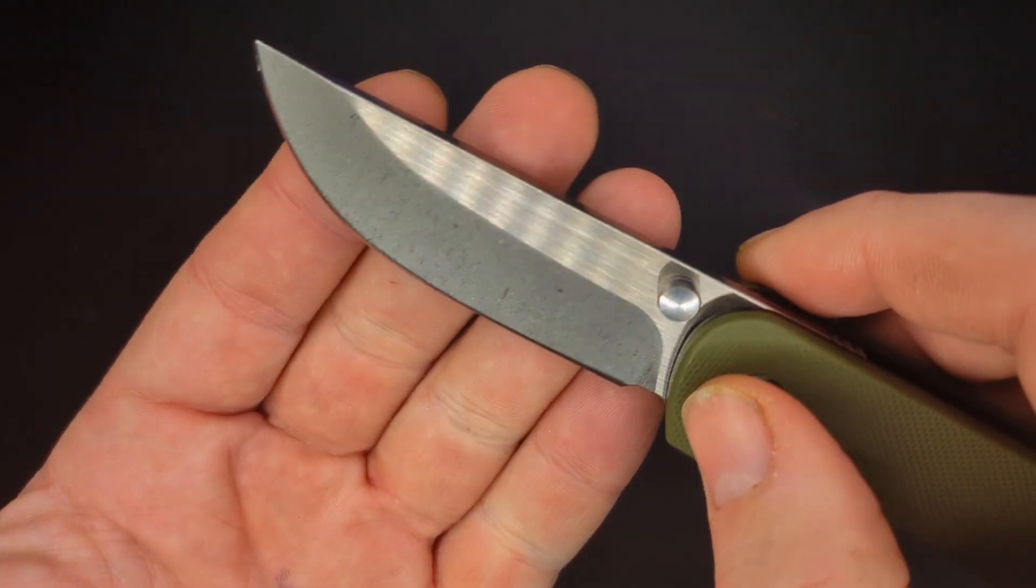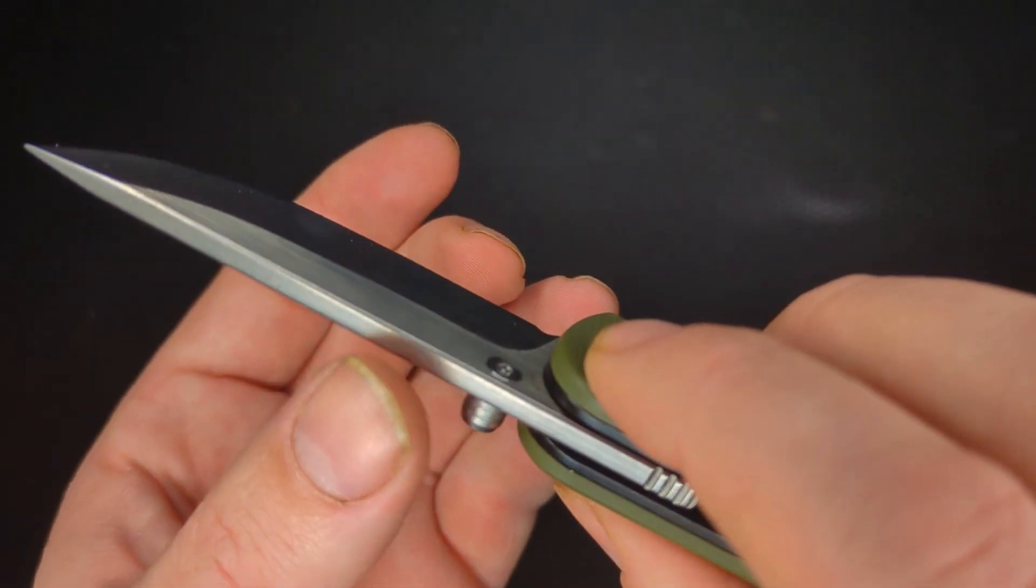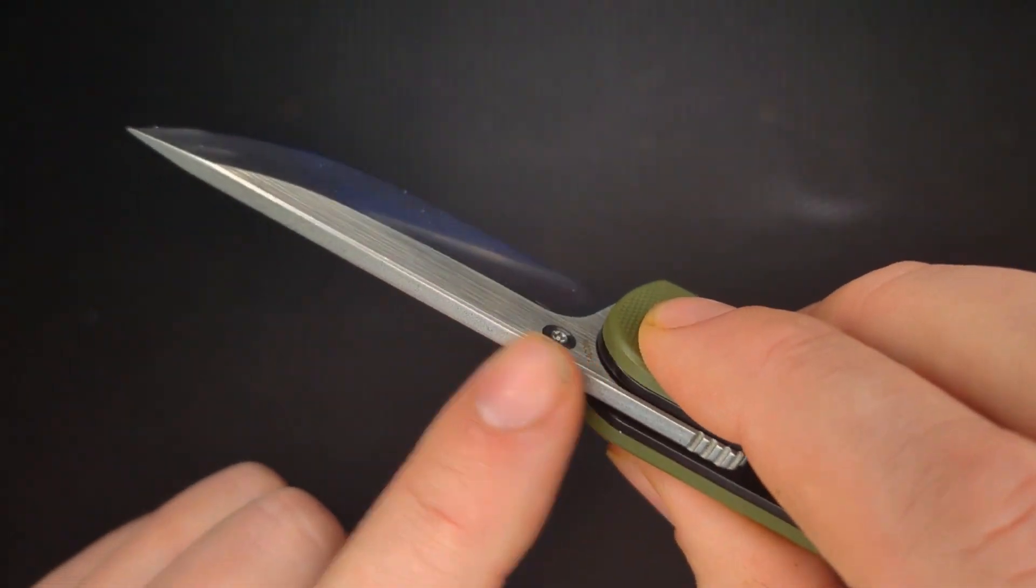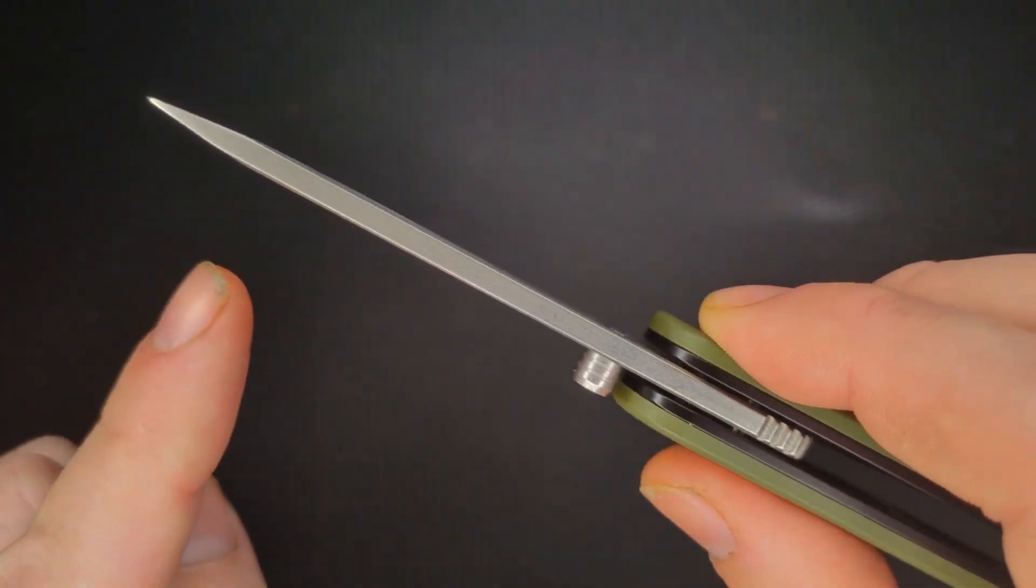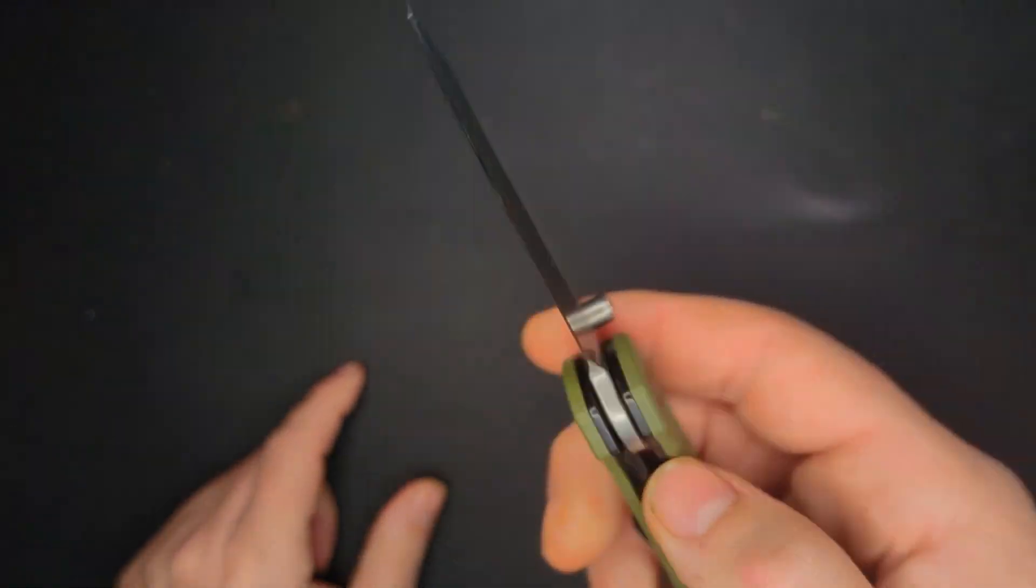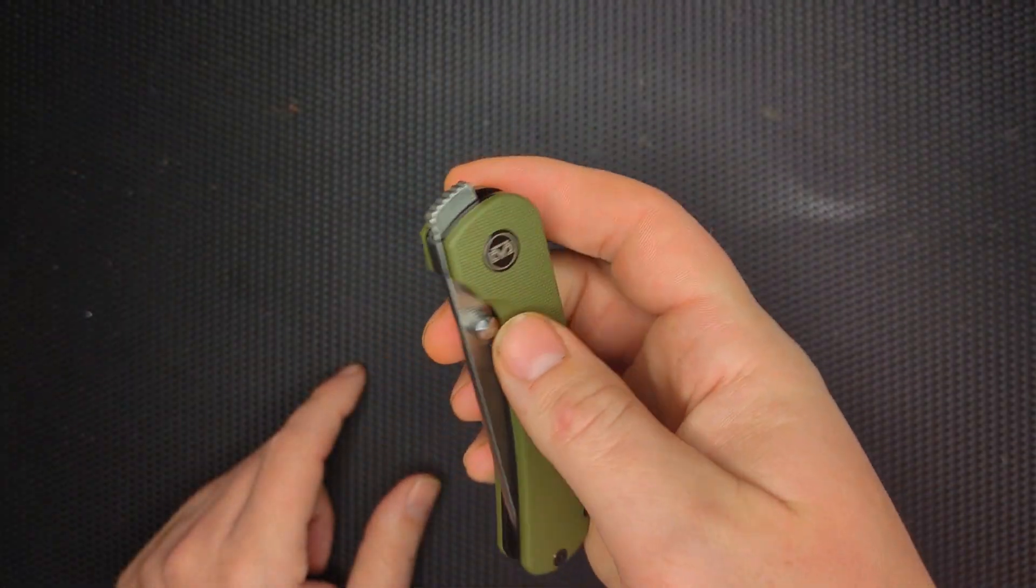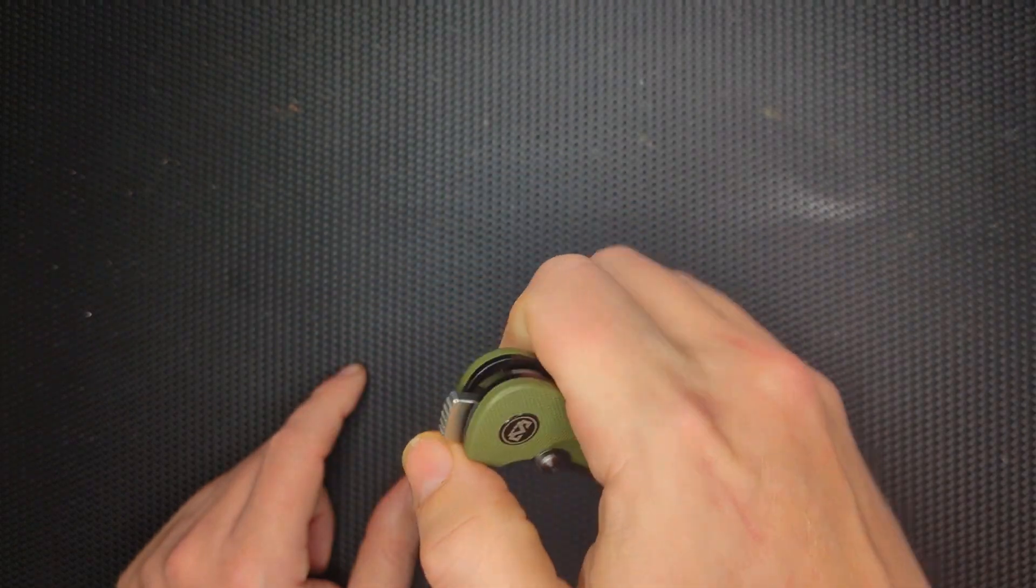It's hollow ground down here, and it has a tumble finish, and then a belt finish up here. That's a cool little thing. It's thick behind the spine to the point, so it's going to be good for poking things and not breaking your tip.